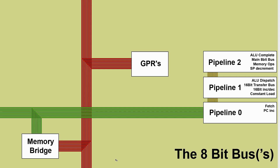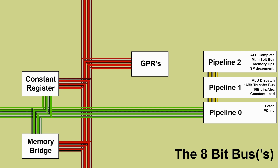One other connection between these two buses is the constant register. The constant register has a connection to both the memory data bus and the main 8-bit bus, but it's going to be one-way on both of these buses. It will read from the memory data bus and is only capable of asserting its value to the main 8-bit bus. The constant register really only exists to solve a problem created by the structure of the pipeline: we don't want to be controlling the same piece of the processor from multiple stages in the pipeline, in order to avoid contention issues.